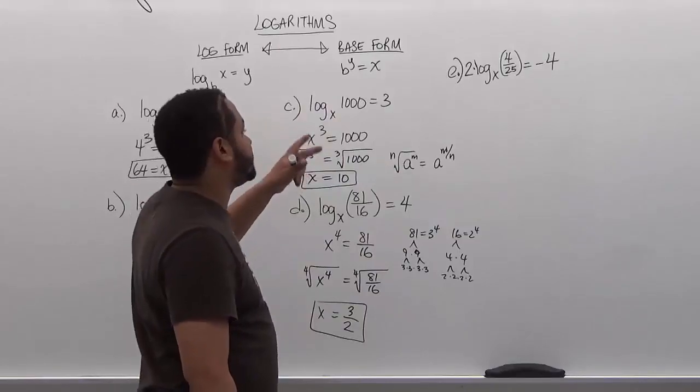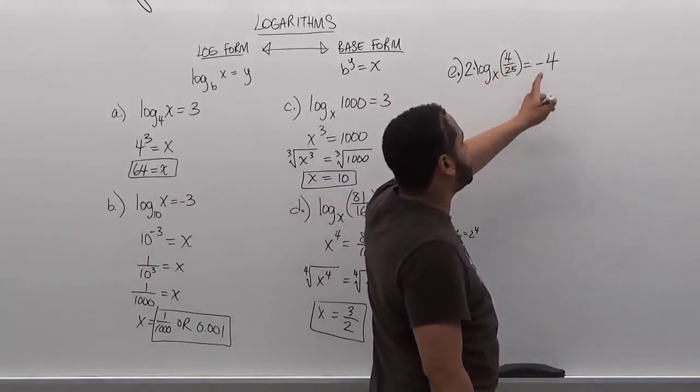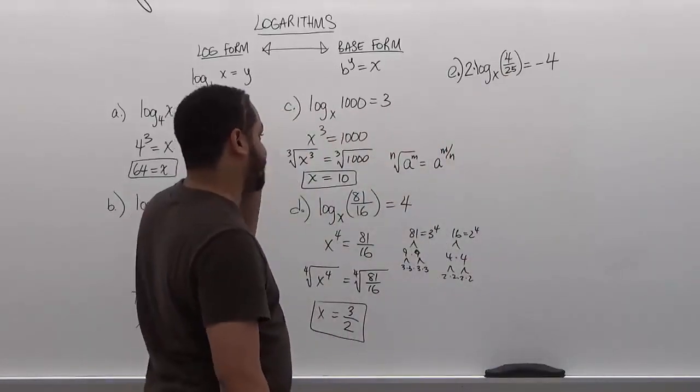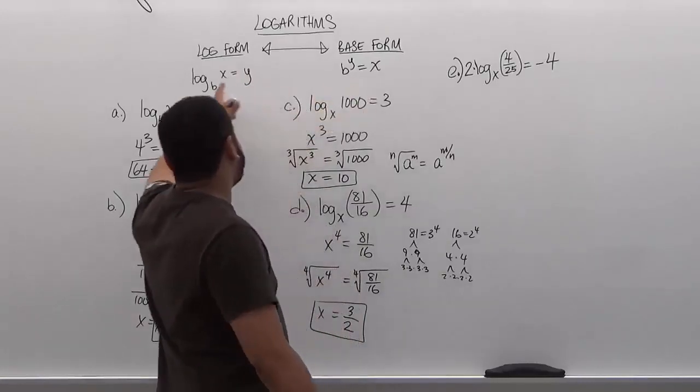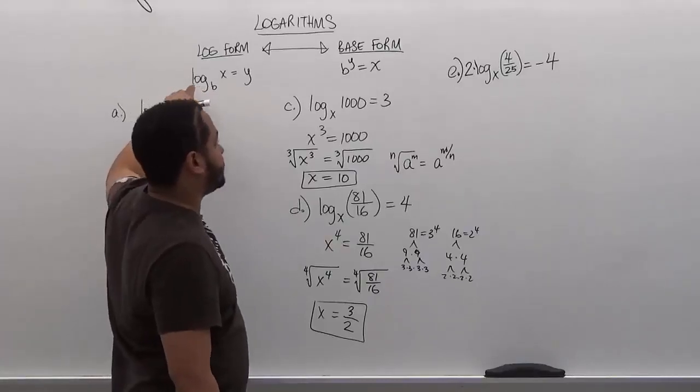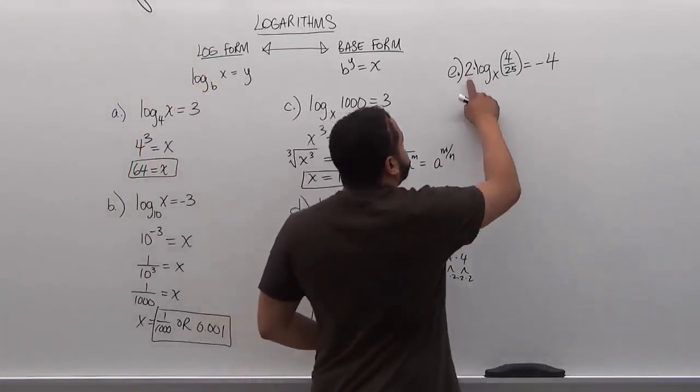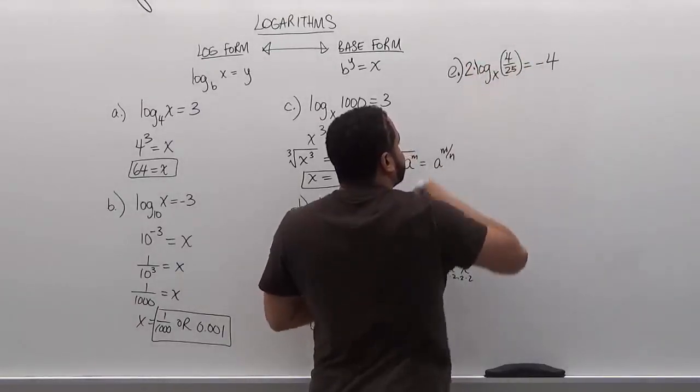For part e we have 2 times the log of base x of 4 over 25 is equivalent to negative 4. This is a particularly interesting problem because the first thing we have to do before we can change from log form to base form is make sure that we have a 1 in front of the log. So our first step here is going to be to get rid of that 2.